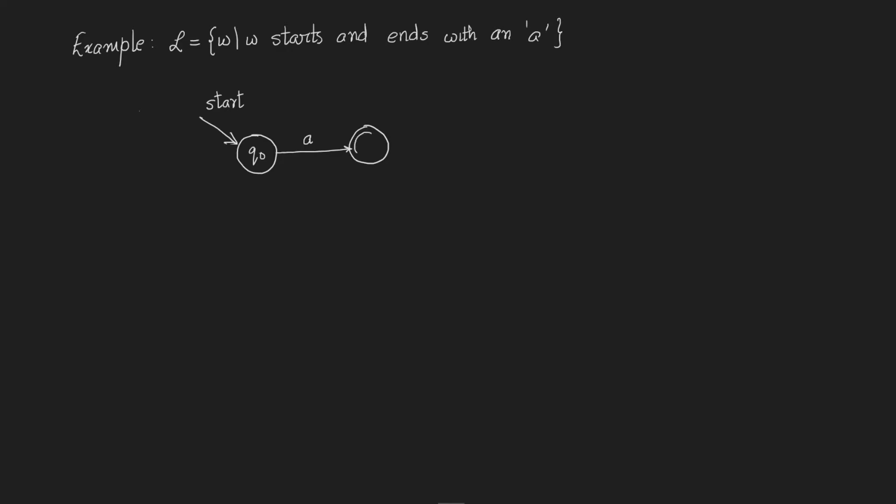If the first symbol seen is an A, then from q0 we move to q1, whereas from q0 if we see a B, then we go to q2. Any word starting with a B cannot belong to the language L. Hence on entering q2, any further symbols observed, either A's or B's, cause us to remain in q2.